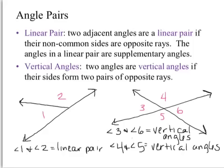We're finishing up section 1-5. We did half of it already — that was saved as part 1. Part 2, we'll go ahead and complete. The first thing we have are two vocabulary words: linear pair and vertical angles.